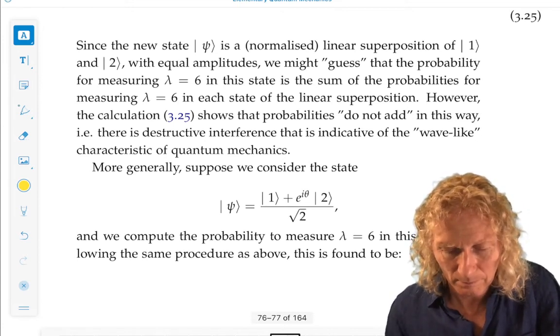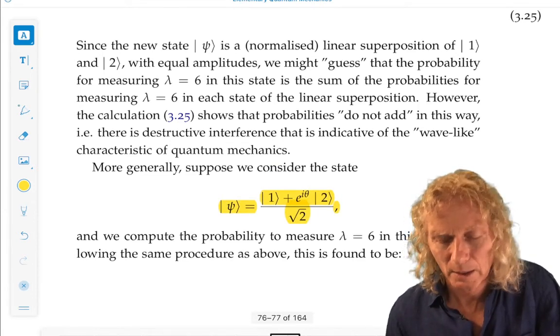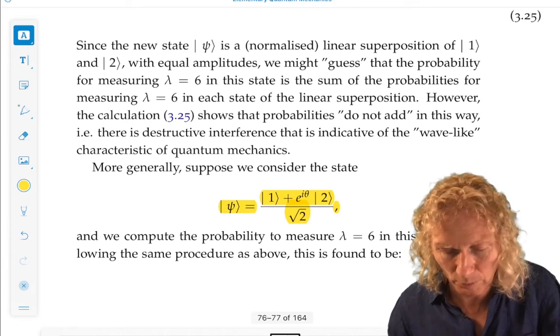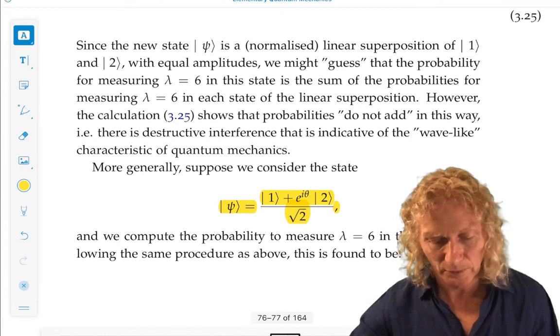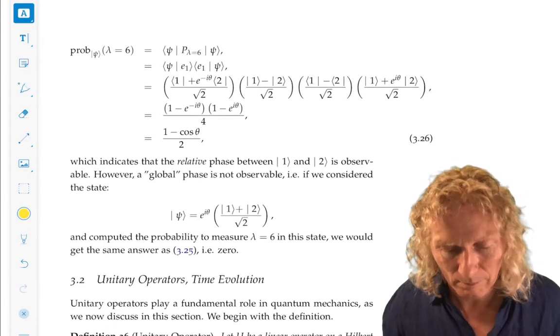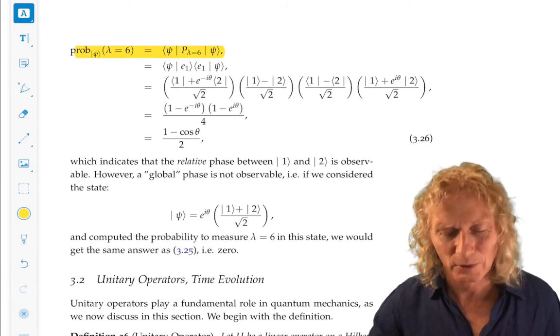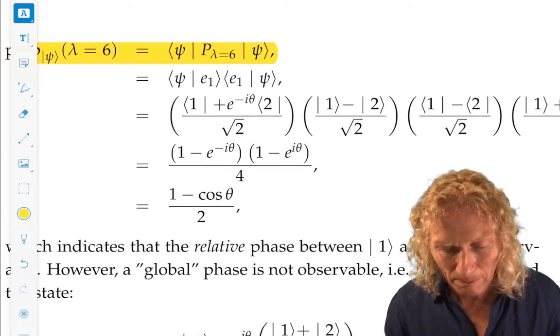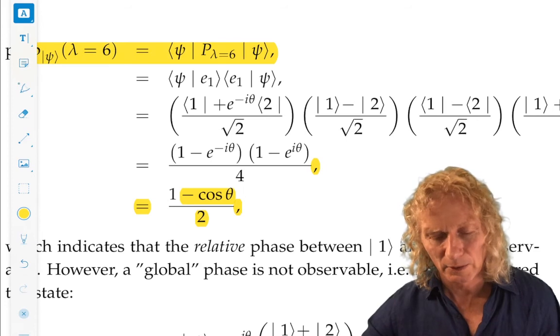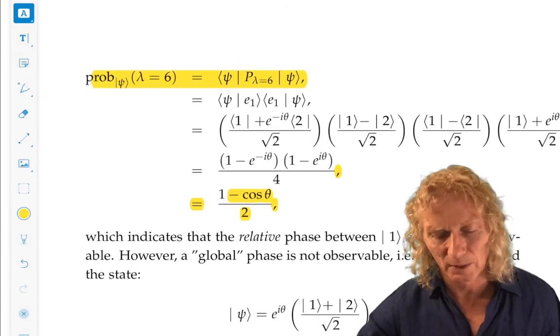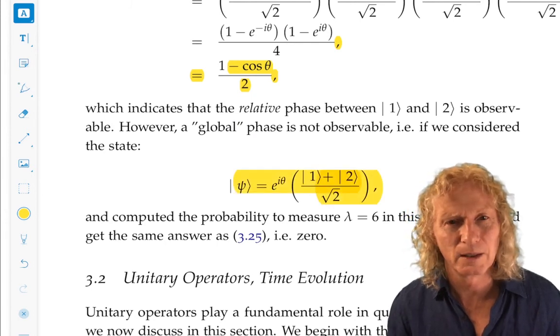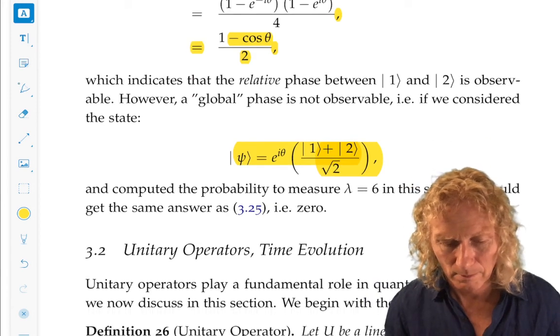But let's look at a different state. Ket 1 plus, not quite ket 2, but ket 2 with a phase factor, e^(iθ), for some real number θ, divided by √2. Now, if we compute the probability to measure λ = 6 in this state, what do you think we're going to get? Do the calculation. What you're going to get is (1 - cos θ)/2, which is interesting because it tells you that the relative phase between two different states is something that can be measured. But if I had an overall multiplicative phase factor, that doesn't change the state from the point of view of measurement. And you can check that.